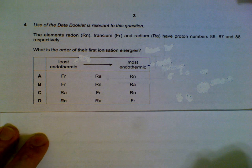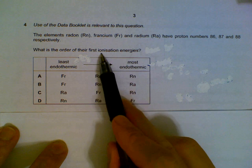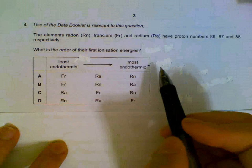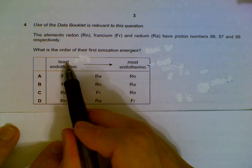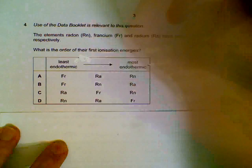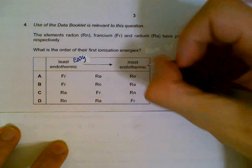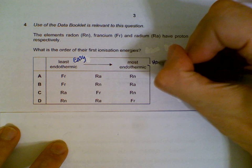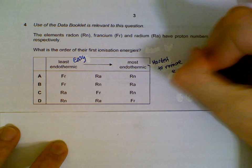Question 4: comparing ionization energy — which one is the least endothermic and which one is the most endothermic? Ionization energy is the removal of an electron, so they're asking which one is the easiest to remove and which one is the hardest. Least endothermic means easier to remove; most endothermic means you have to put in more energy.